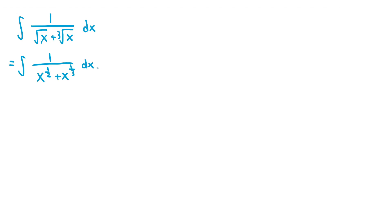With the integrand in this form, we're all set to do a rationalizing substitution. This means we do a substitution to turn the integrand into a rational function in terms of u.